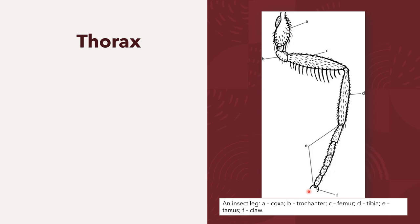The insect leg contains the following podomeres: the coxa, the trochanter, the femur, the tibia, the tarsus, and the claw.